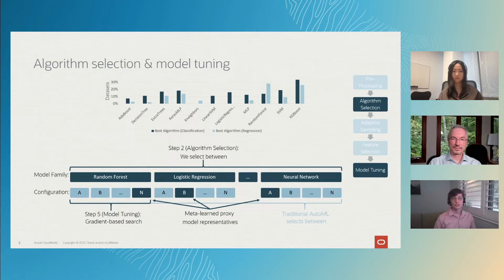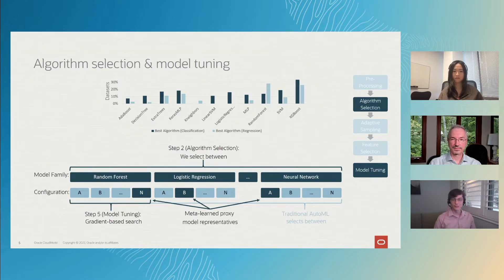Each of these models also have a bunch of hyperparameter settings that can additionally impact how well they perform. Traditional automated machine learning seeks to find the best model and hyperparameters all together in one go. As you can imagine, this is a large number of options, which means it can take a while to find the right answer.